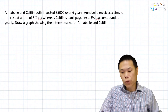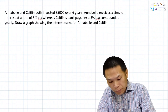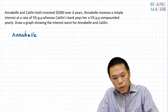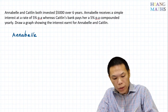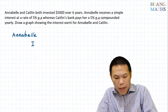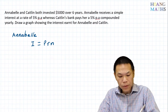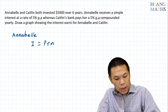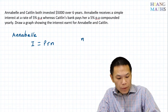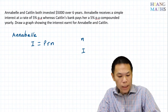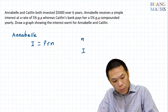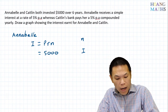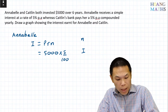Let's work out Annabelle's interest first. Annabelle receives 5% per year — that is simple interest. The rule for simple interest is I equals PRN, over six years. Let me draw a table: N is the number of years, I is the interest. So I = PRN, where P equals $5,000 and R is 5% per annum.